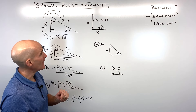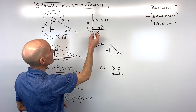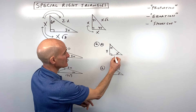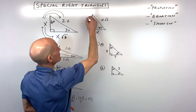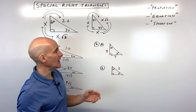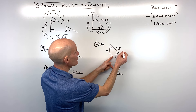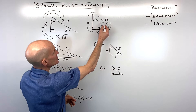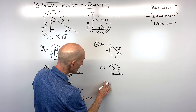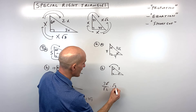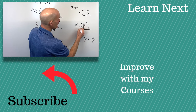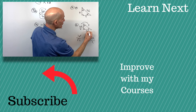Now for the 45-45-90 — this one is a bit easier because the two legs are congruent. For letter A, given one leg is 4, the other leg is automatically 4. To get the hypotenuse, multiply by square root of 2: that's 4 square root of 2. For letter B, given the hypotenuse is 3 square root of 2, we divide by square root of 2 and rationalize: 3 over square root of 2 becomes 3 square root of 2 over square root of 4, which is 2 — so each leg is 3 square root of 2 over 2. Since the two legs are congruent, you've got all sides.